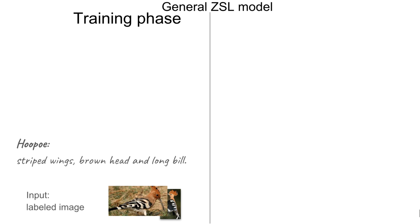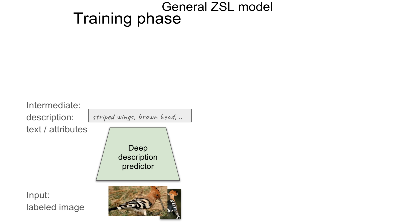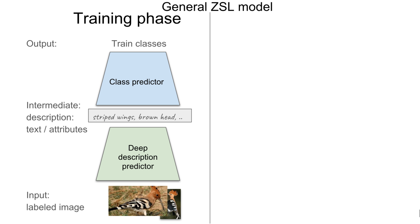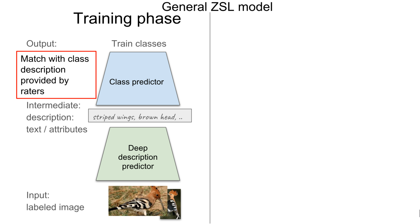In the general Zero-Shot Learning setup, on training, we have a set of labeled samples, and each class is provided with a semantic description, like stark wing or brown head. We train a deep description prediction model to make an intermediate representation that decomposes an image into basic building blocks. The last part maps the predicted description to a class by matching the intermediate description of the image with the class description provided by raters.